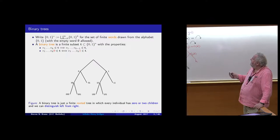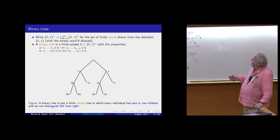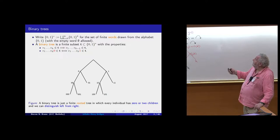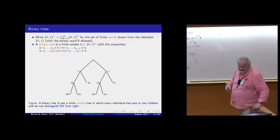The tree-like property is that if a word is in the tree, then so are all of its prefixes. So if '001' is in the tree, then '00' is, and '0' and the empty word. The binarity property is that if we have a vertex where the word ends with zero, then what we get by replacing that zero by a one is also going to be there, and similarly if a word ends with a one, the word we get by replacing that one by a zero is also there. That's what gives us binarity.